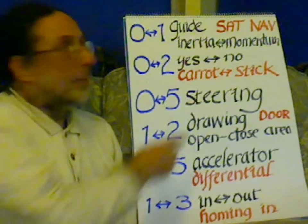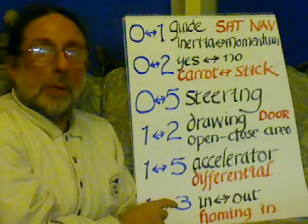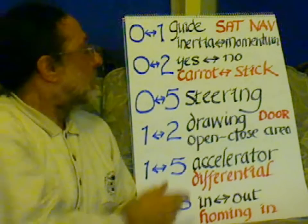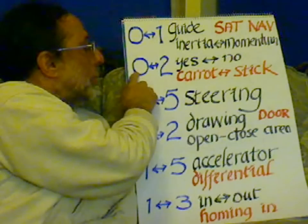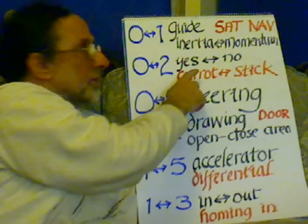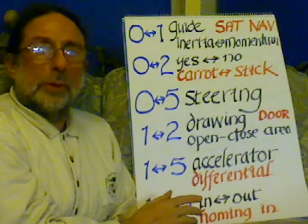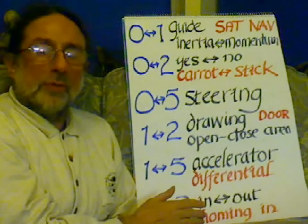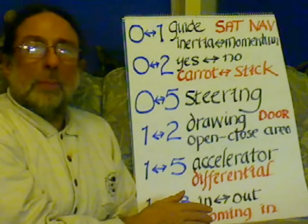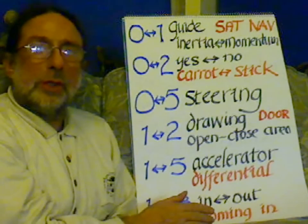The reverse function would be an image stabilizer — to stabilize the image, like in a camera. From 0 to 2, from the point to the face, is a yes or no: the carrot or stick, the reward or the punishment. You train the device to follow the signal, and if it makes an error, it's either yes or no — say, to retrace in the maze.